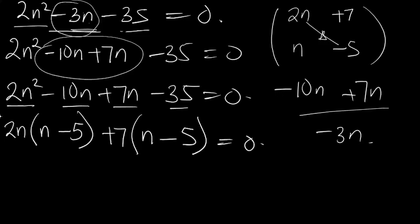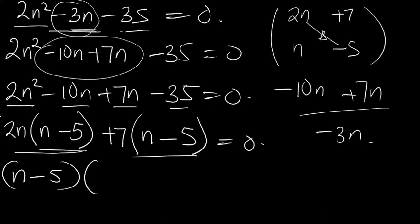Since (n − 5) is common, we factor it out to get (n − 5)(2n + 7) = 0.